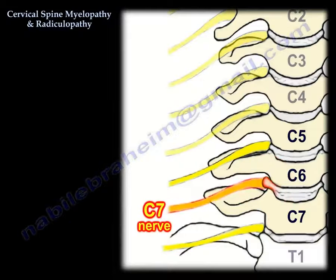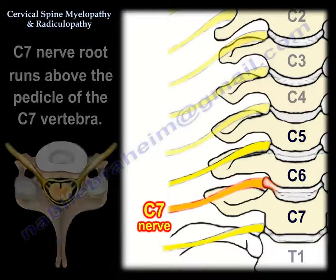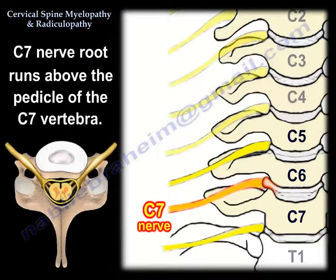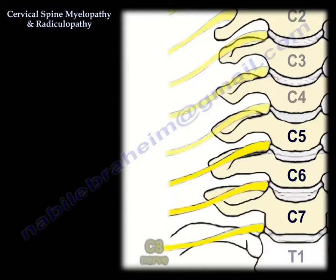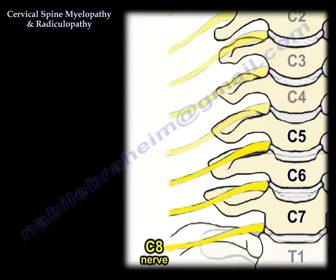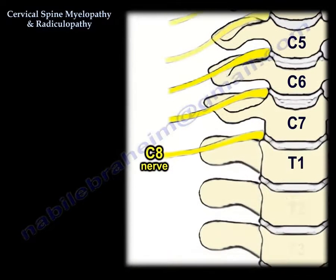This nerve root runs above the pedicle — so the C7 nerve root runs above the C7 pedicle. The C8 nerve root runs above the T1 pedicle, and then the T1 nerve root runs below the T1 pedicle.